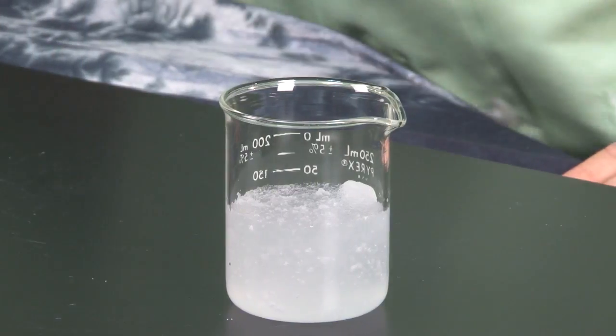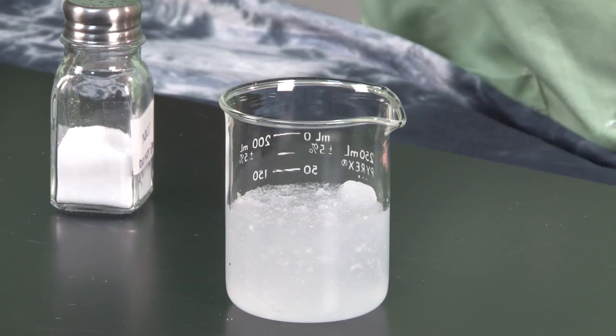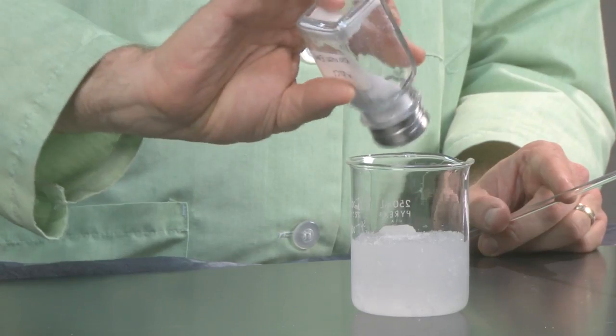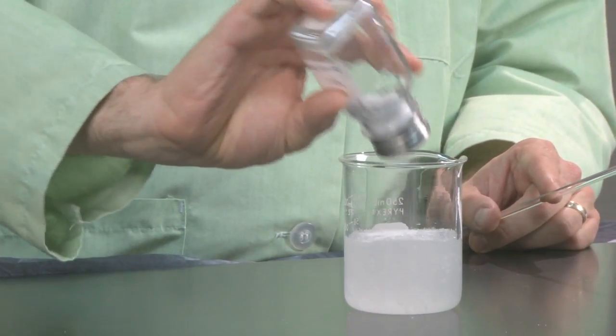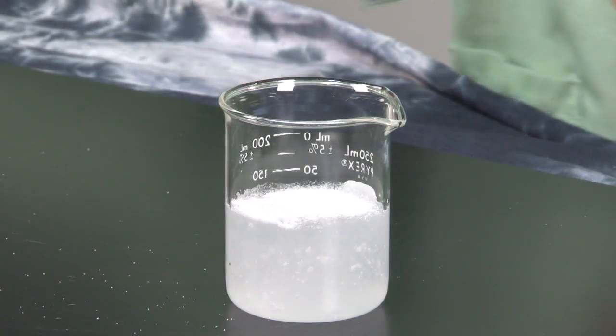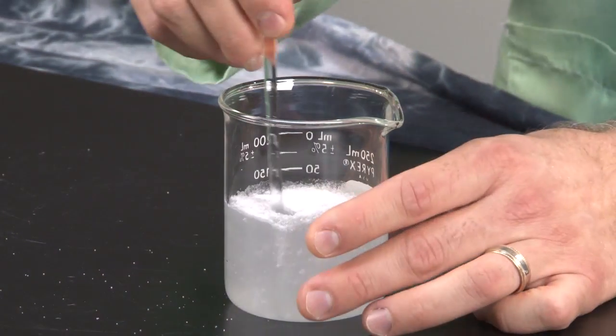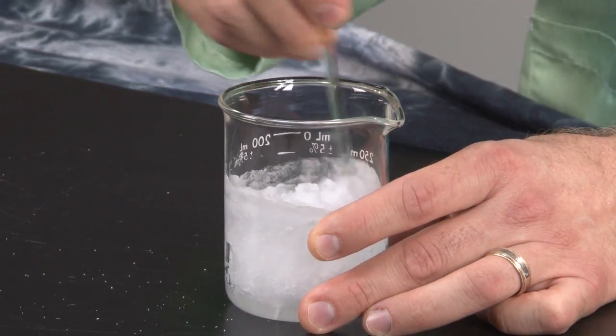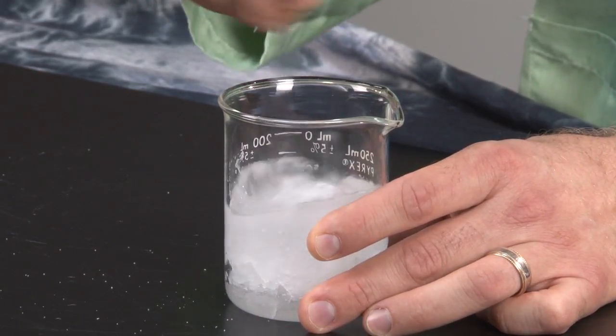So I can do something to reverse this process now. I can add some salt, some sodium chloride. So this is just regular table salt. I'm going to add this on top. And then I'm going to stir it in just a little bit. And as the salt starts to interact with the polymer here, it's going to soften it up.